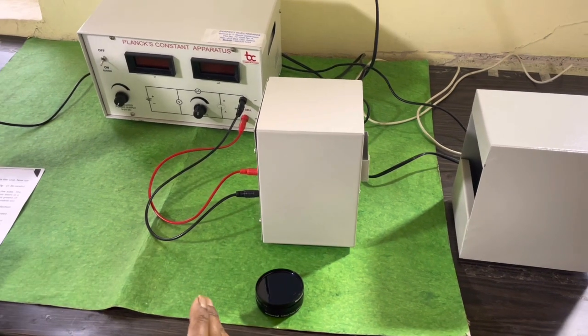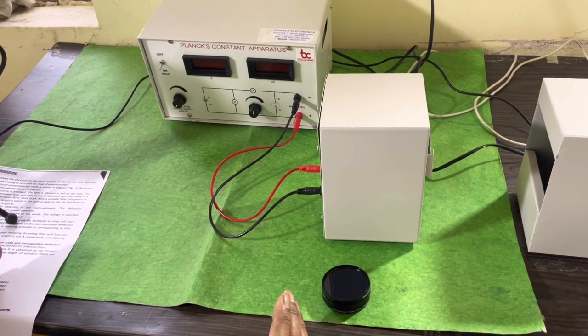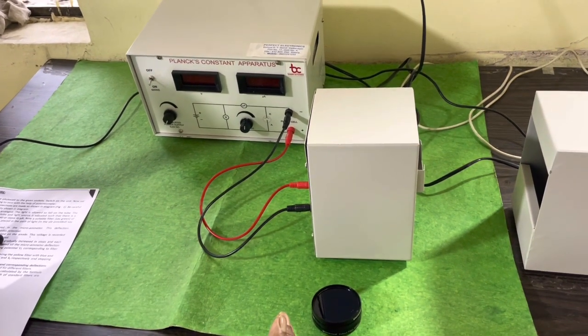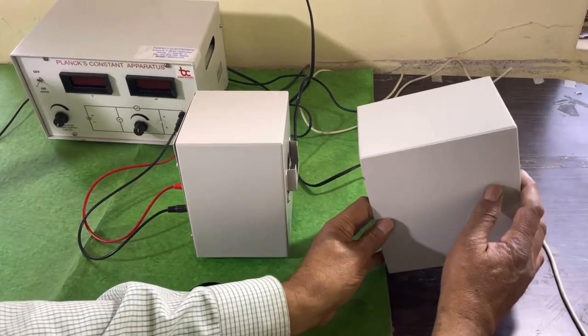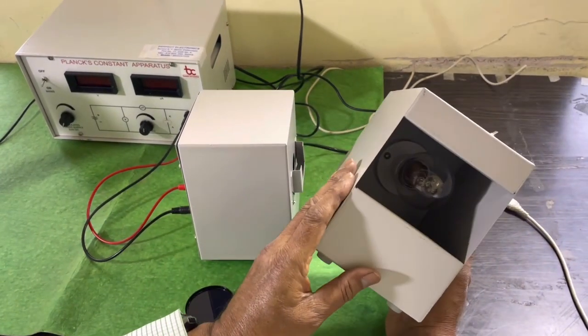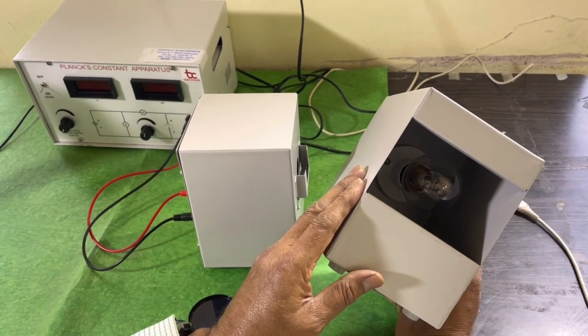This is an experimental setup for finding Planck's constant by the use of a photocell. We shall see first its construction. This is the light source which consists of a filament lamp of 100 watts.